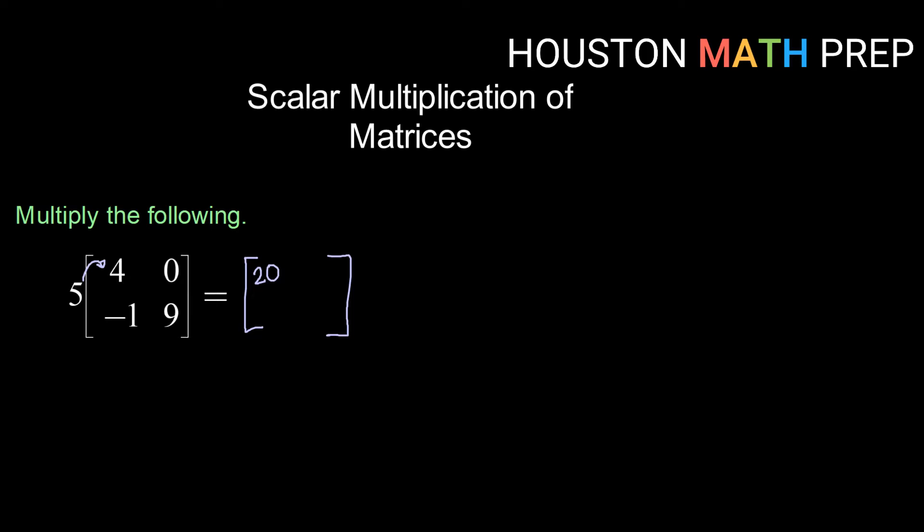5 times 4 is 20. For row 1, column 2, I'll distribute 5 times 0 is 0. Moving to the second row, distributing my 5, 5 times negative 1 is negative 5. And for row 2, column 2, 5 times 9 is 45. So here is my result of multiplying the scalar 5 by this 2 by 2 matrix.